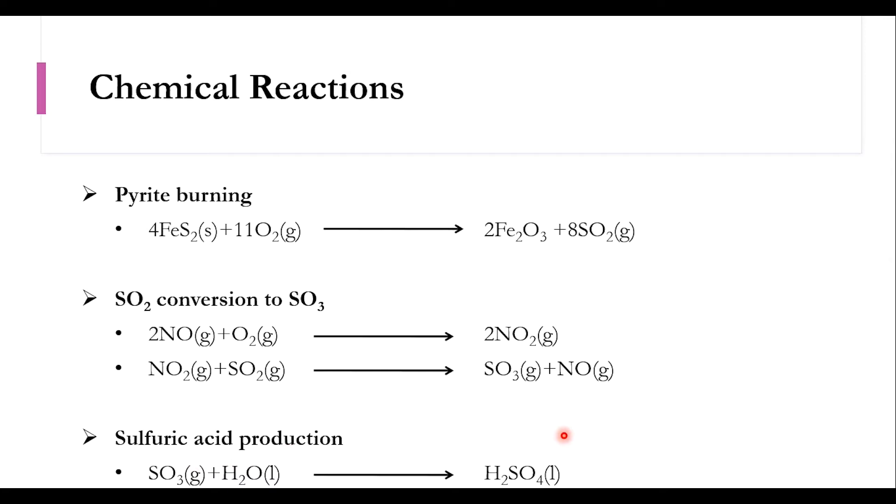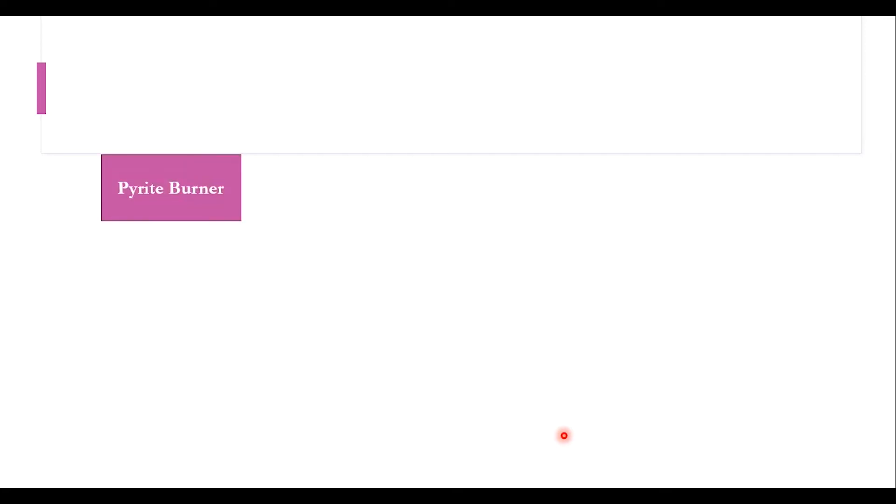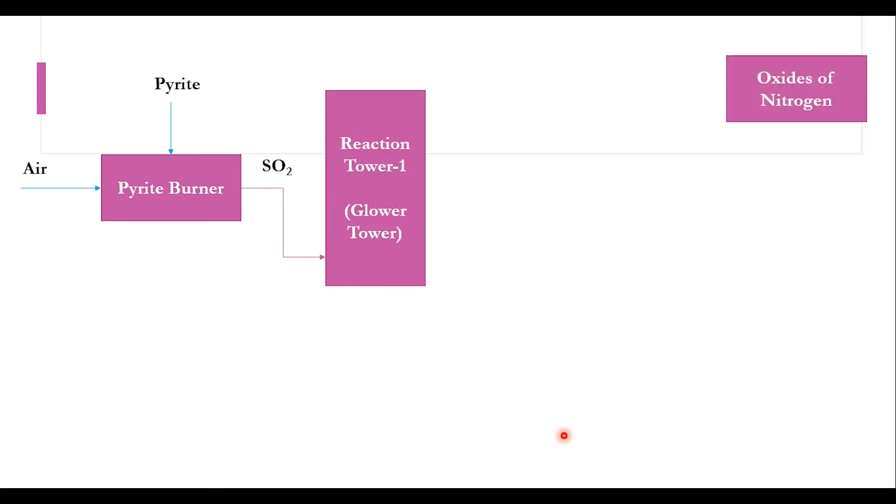In the first case, the pyrite burner, air and pyrite are fed. Pyrite burning takes place and SO2 is produced, which is sent to reaction tower one, named the Glover tower. Oxides of nitrogen are also fed in the system - we discussed there are three raw materials: air, pyrite, and NO/NO2.